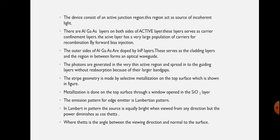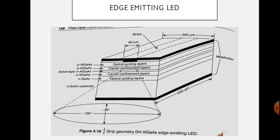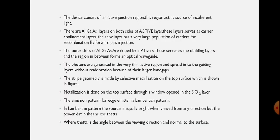The indium phosphate layers act as the cladding layer, and the region in between forms the optical waveguide. When doped with the indium phosphate layer, the refractive index is reduced, so that region acts as the cladding region. The photons are generated in the very thin active region and spread into the guiding layer without reabsorption, because of the larger band gap.